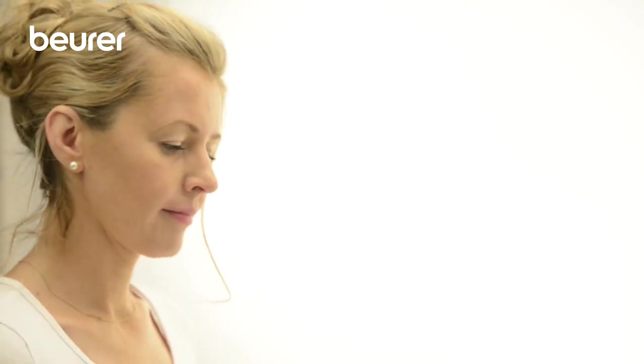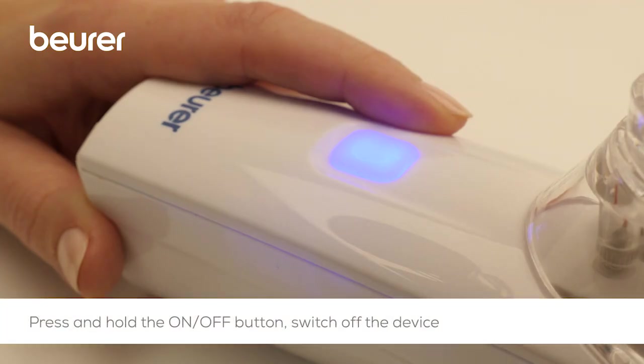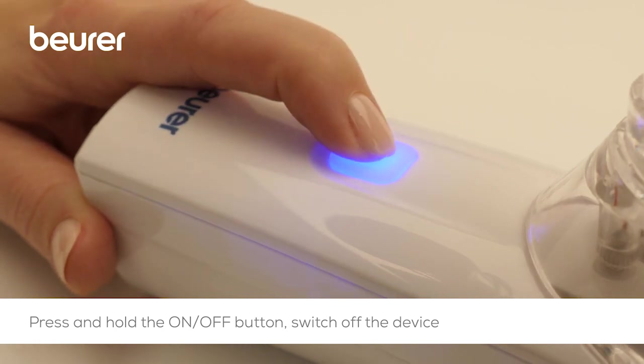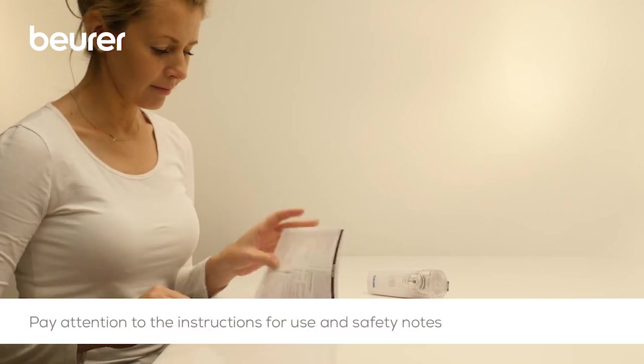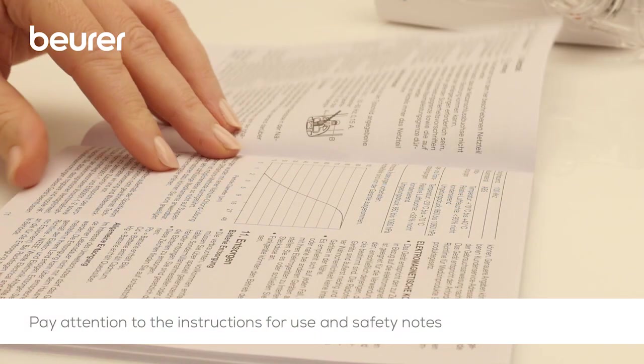Once there is no cleaning liquid left in the opening of the mesh atomiser, switch the nebuliser off again by pressing the on-off button. Please also pay attention to the instructions for use and safety notes.